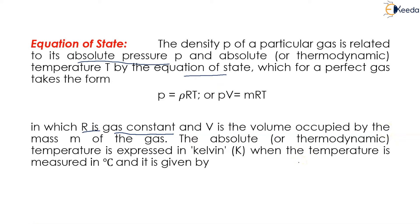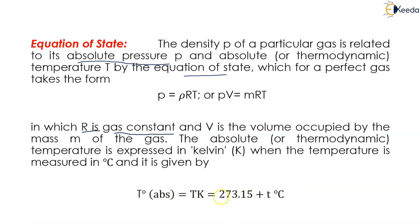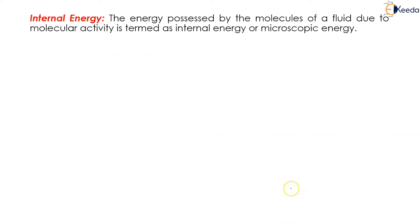The absolute temperature is expressed in Kelvins when the temperature is measured in degrees Celsius, given by T_absolute = T_K = 273.15 + degrees Celsius. Next is internal energy.